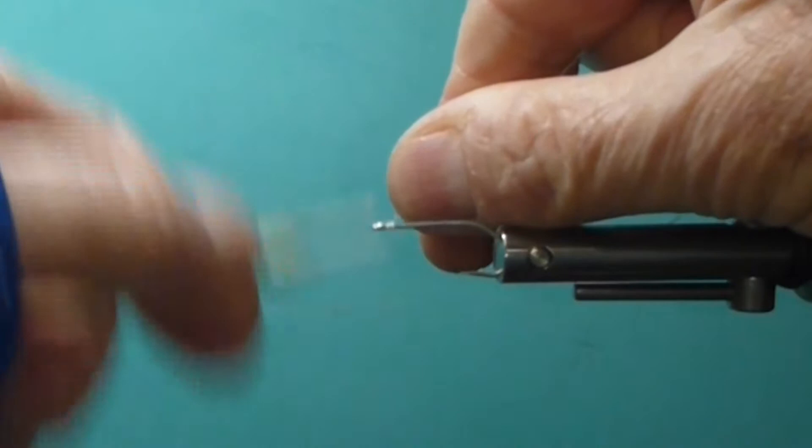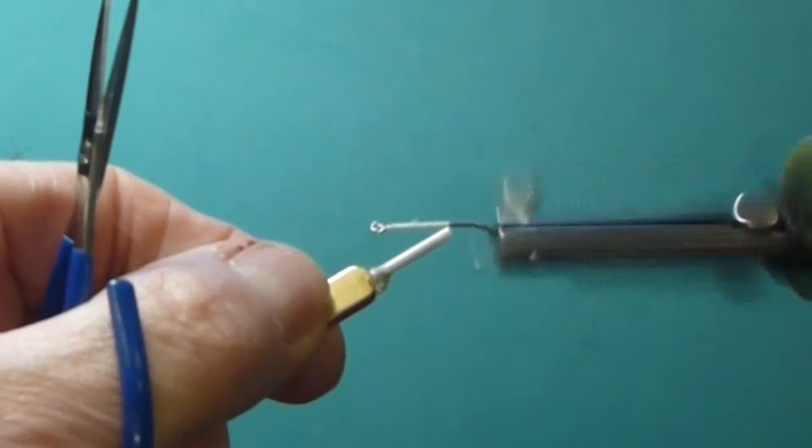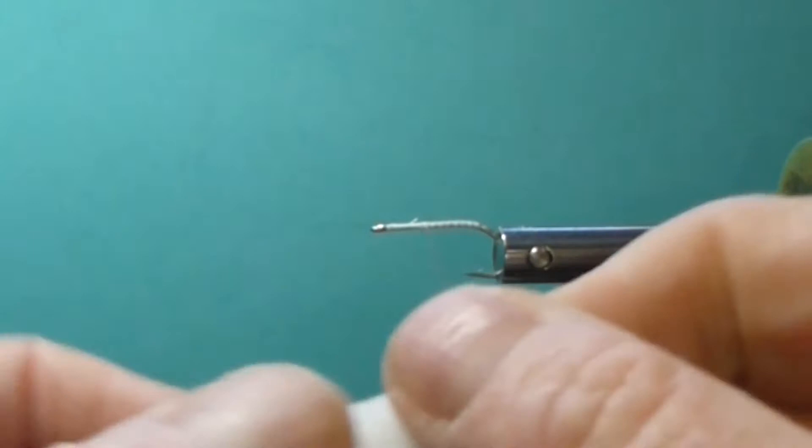So I'll get my thread started on the hook, address the shank as we always do, and I come to about midpoint. I take a little piece of foam, about three eighths of an inch, and I'm just going to start it on the back here, about midpoint.